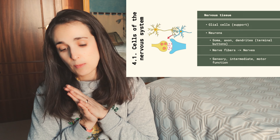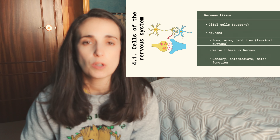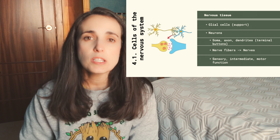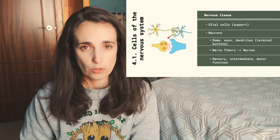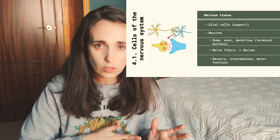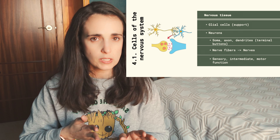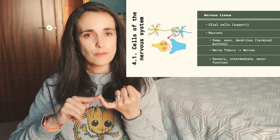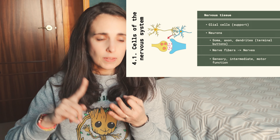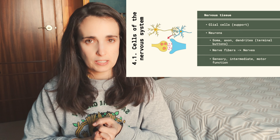In the nervous system, apart from neurons, we have another type of cells, which are the glial cells, which are cells of support — support for the neurons, of course, because they are the important ones here. They will feed them, clean them, and protect them.